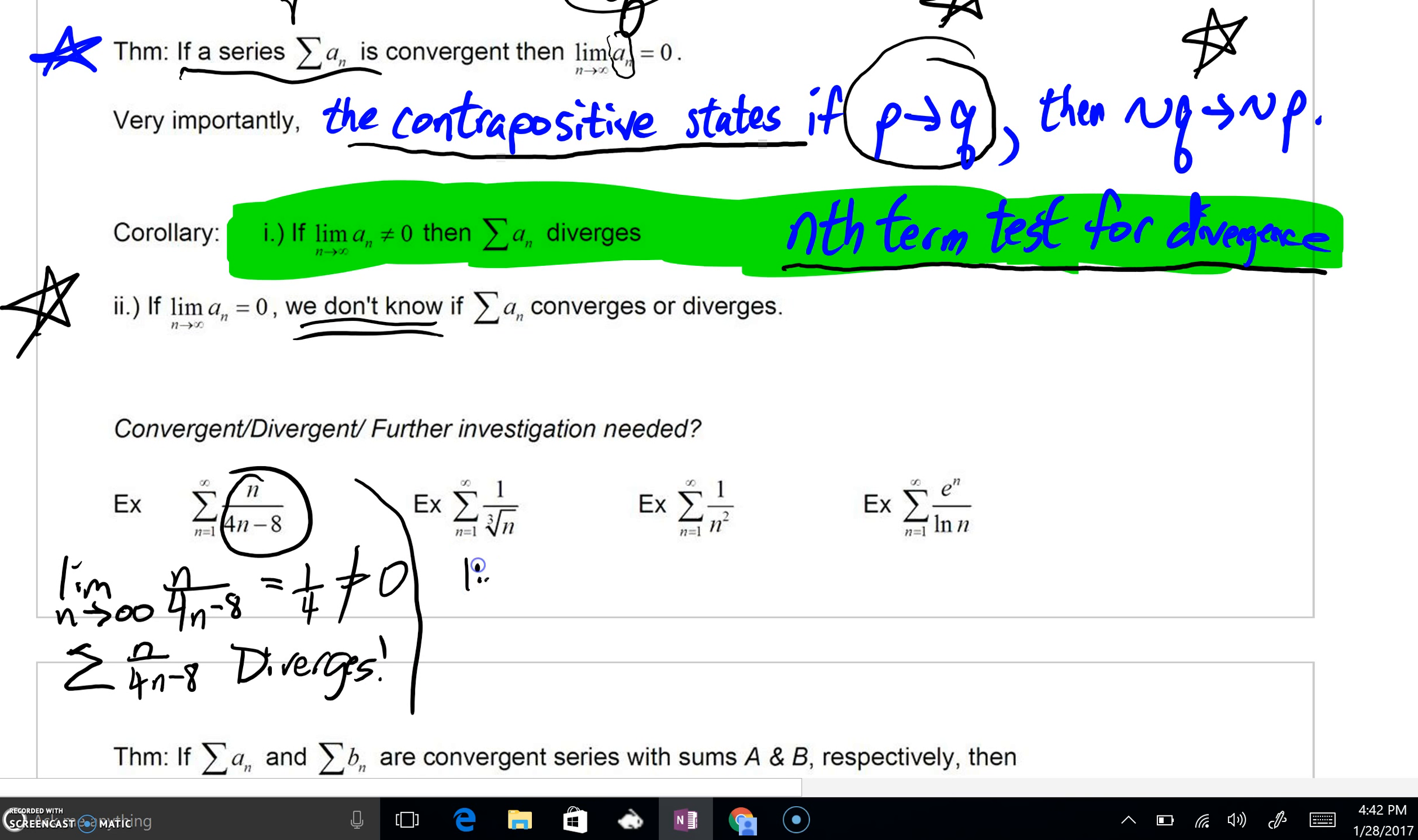Why does it diverge by the nth term test for divergence? Take a look at this next follow-up. The limit as n goes to infinity of 1 all over the cube root of n. Well, your denominator is going to get very, very large. 1 over something large is going towards zero. We don't know what's going on. When the nth term's limit arrives at zero, we're going to say further investigation is needed. We're going to get to our next lesson, our next section. But for right now, we'll say further investigation.